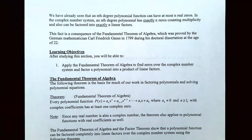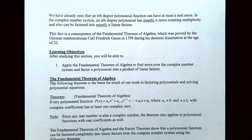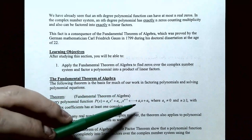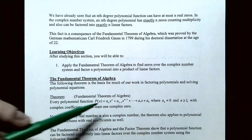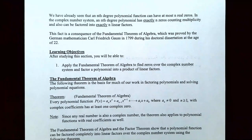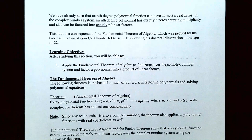The fundamental theorem of algebra is the basis of much of the work in factoring polynomial functions and solving polynomial equations. The theorem states that every polynomial function written in its general form — a_n x^n + a_{n-1} x^{n-1} + ... + a_1 x + a_0 — where the leading coefficient a_n is not zero and the degree is greater than or equal to 1, will have at least one complex zero. The coefficients could be real numbers or complex numbers.